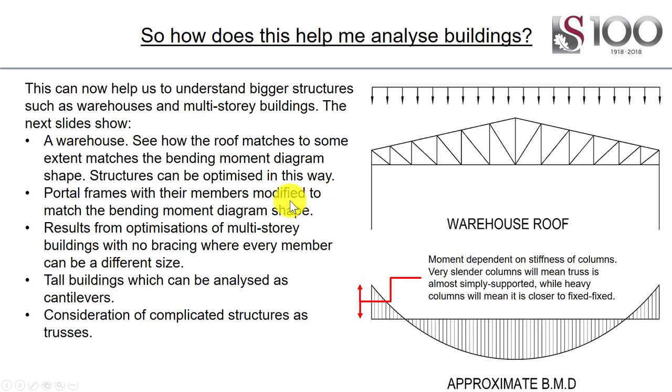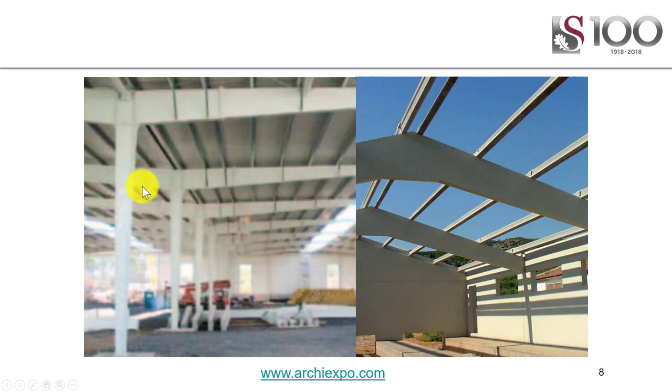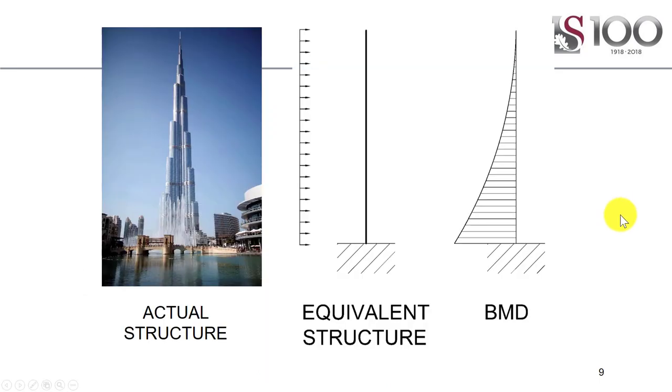Coming back to our understanding, portal frame members can be modified to match the shape of bending moment diagrams to optimize them. I'll show you some optimizations, tall buildings, and various other systems. For instance, here's some tapered beams, once again optimized to match the shape of the bending moment diagram to get some efficiency out of the system.